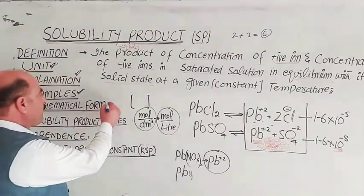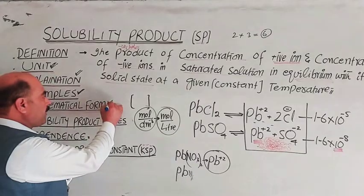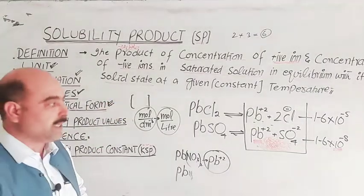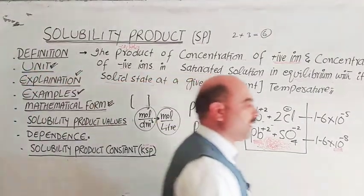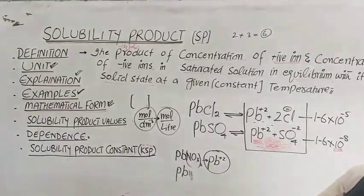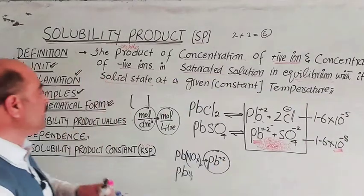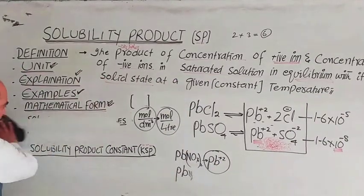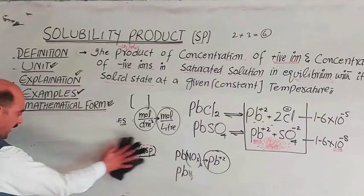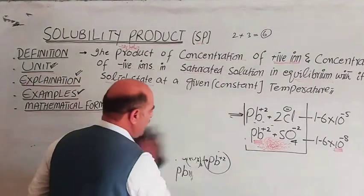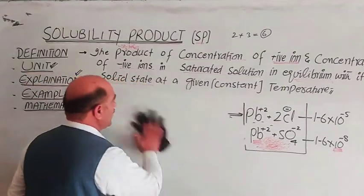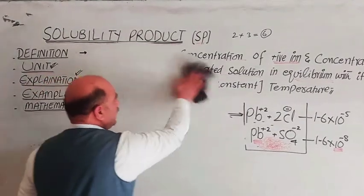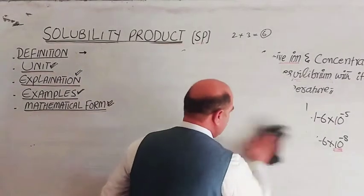Now the most important part: the mathematical form. Students are often confused by this, but it is quite simple. The mathematical form of K_SP is the most important topic, and once it is clear, the derivation is straightforward.